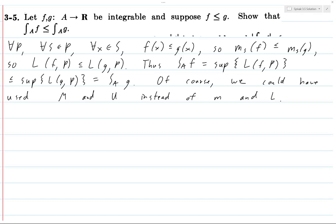And then you take the sum of that over all rectangles S in this particular partition P, and you get U of F,P is less than or equal to U of G,P. And so then you take the infimum over all partitions P, and you get infimum of U(F,P) is less than or equal to infimum of U(G,P).